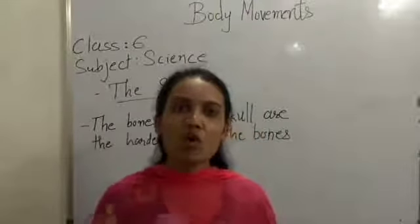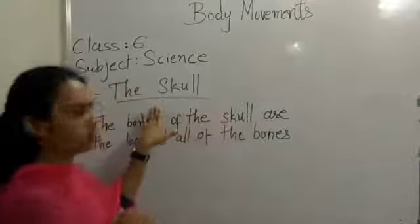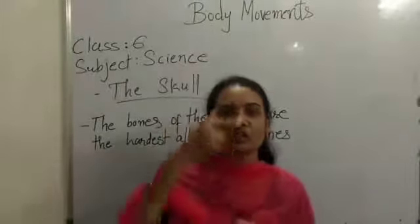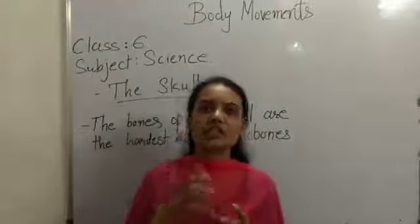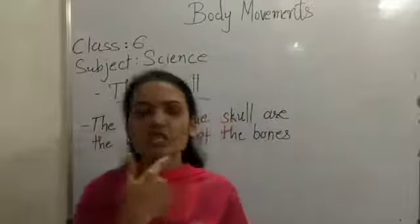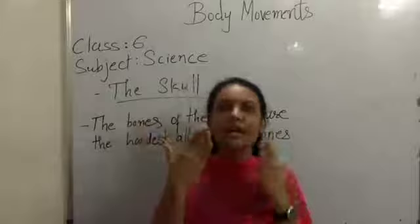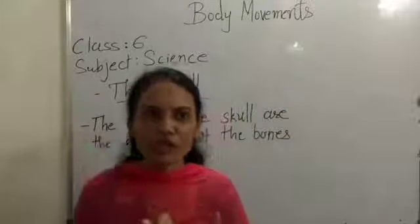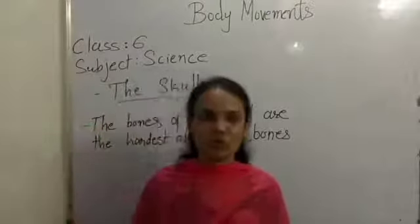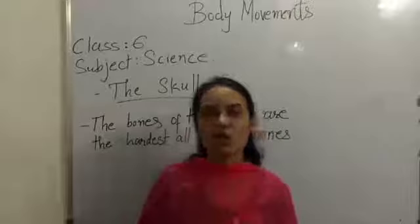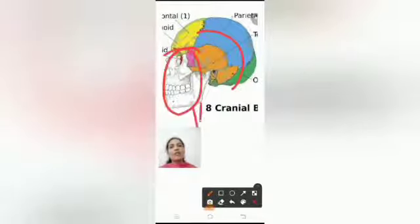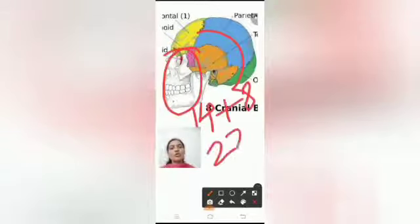Now we are going to see the bones present in different parts of the body. The first is the skull bone. Skull bones are the hardest among all the bones in our body. The skull contains two regions: the cranial and the facial region. The cranial region protects our brain and runs from the front to the back of the head. The facial bones give a proper shape to our face. There are 14 facial bones and 8 cranial bones, giving a total of 22 skull bones.